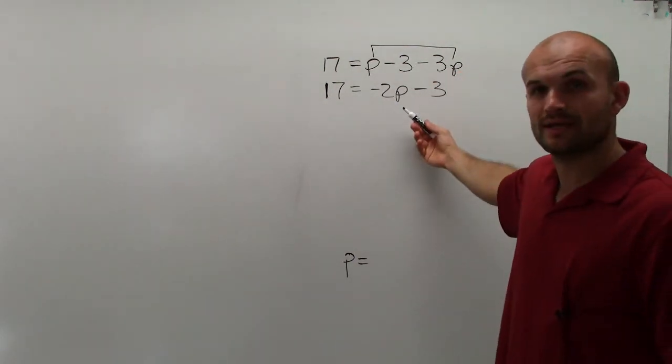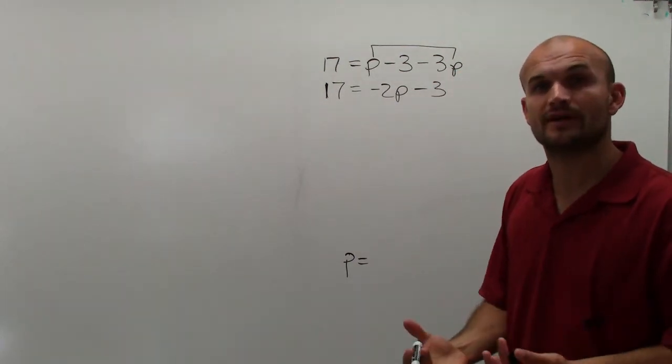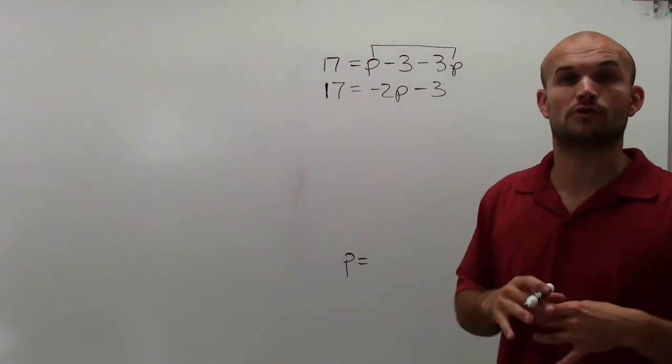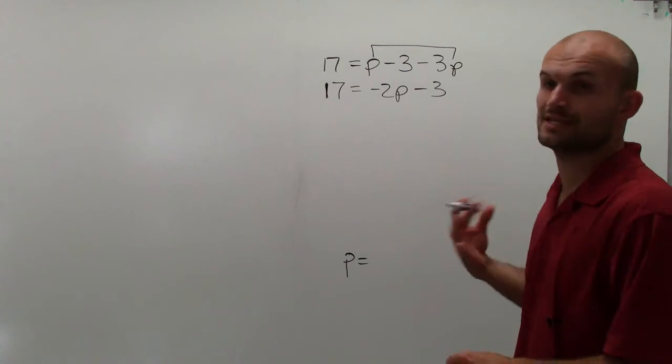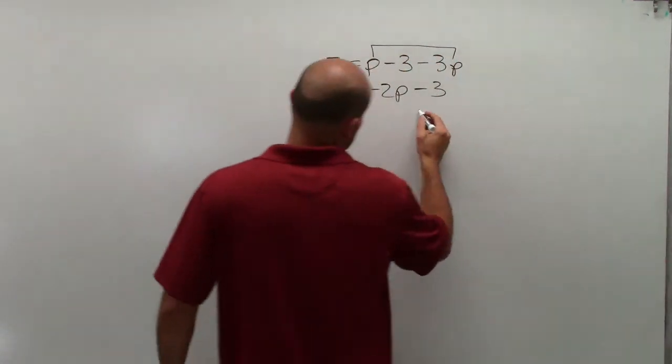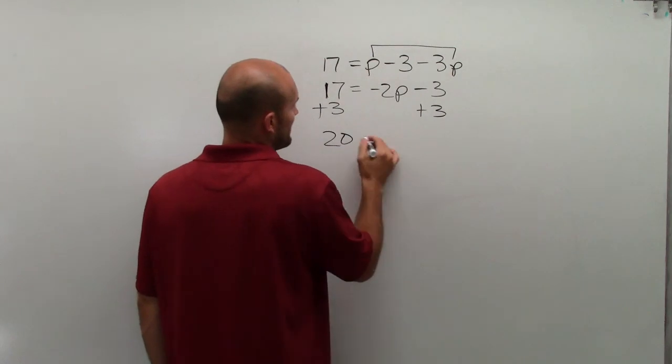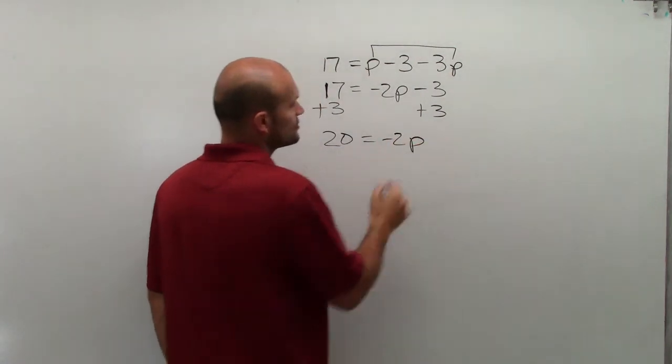So I take a look at my variable p and I say, all right, what is happening to the variable? What do I need to undo? And remember, we always undo in reverse order of operations. We always undo addition and subtraction first. I see it's being subtracted by 3, so I add 3 on both sides. I get 20 equals negative 2p.